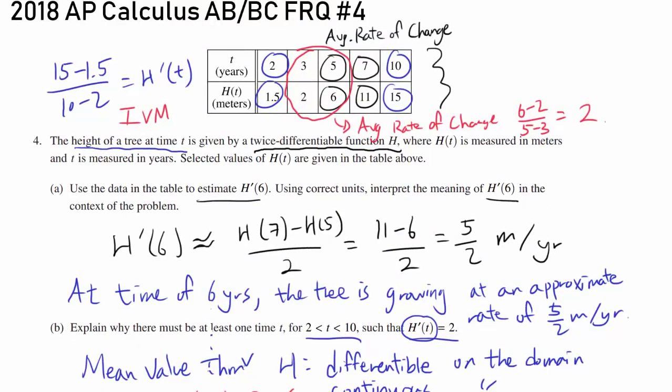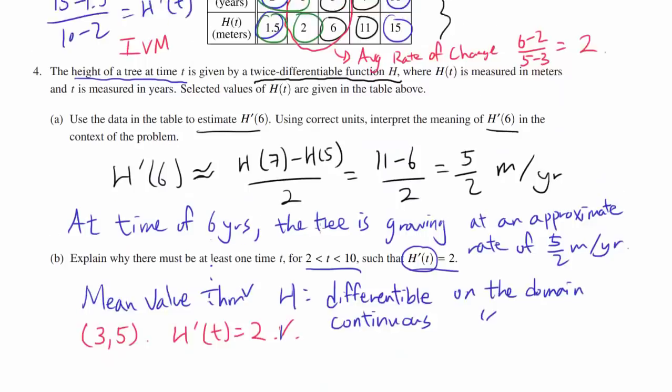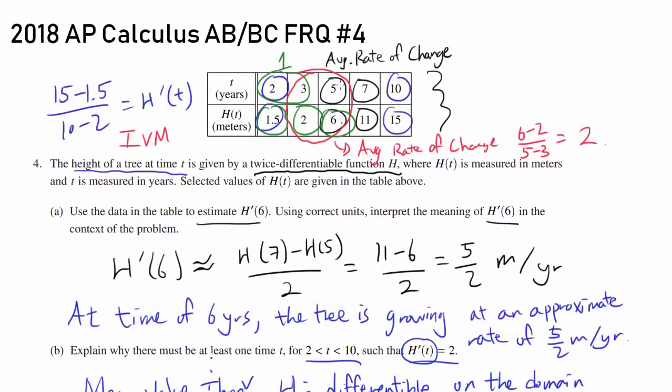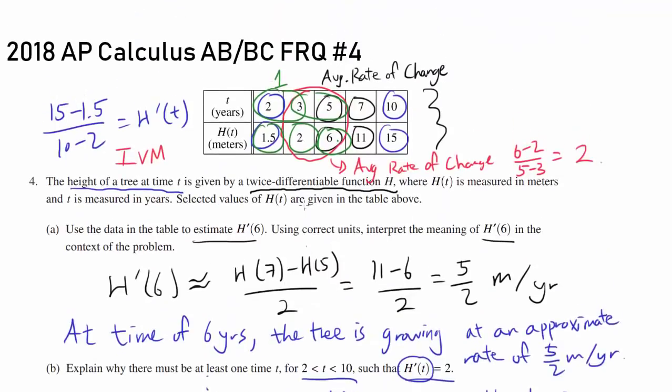So the trapezoidal sum: the base length of the trapezoids are going to be H(t), and the height of the trapezoid is going to be the length of the interval. For the first one, we have (1.5 + 2)/2 times 1, because we are going from 2 to 3. Plus, for the next one, we have (2 + 6)/2 times the height of 2.